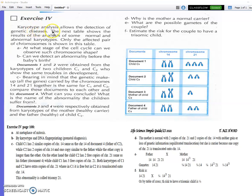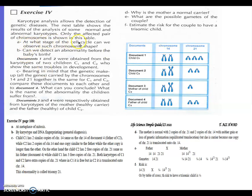Exercise 4: Karyotype analysis allows the detection of genetic diseases. You know by karyotype we are able to know if an individual has a chromosomal abnormality. The next table shows the results of the analysis of some normal and abnormal karyotypes. In this document, documents 1 and 2 show analysis of karyotypes of normal and abnormal individuals. Only the affected pair of chromosomes is shown in this table.